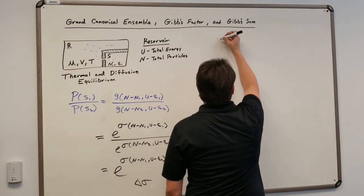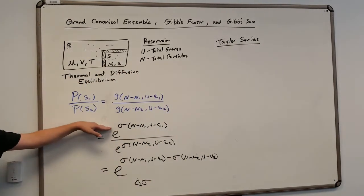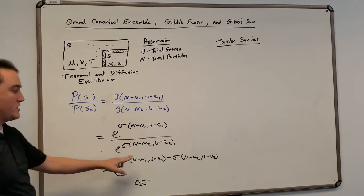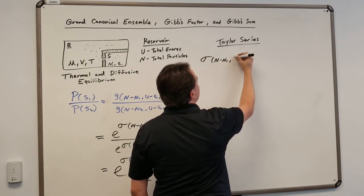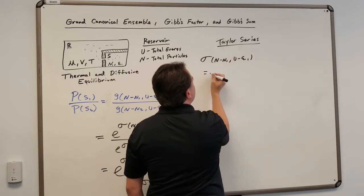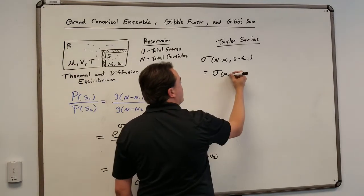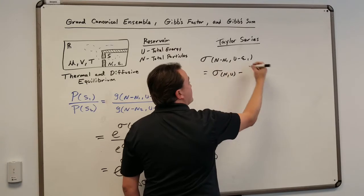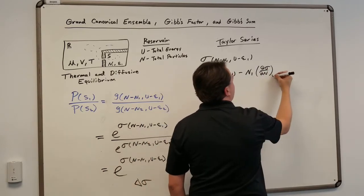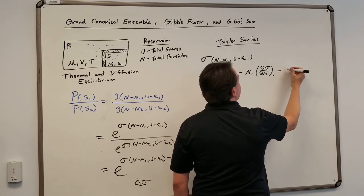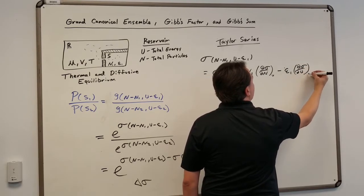Now we're going to use the Taylor series to write this equation — just the first one, since the second is exactly the same with different subscripts. For entropy of (N − N₁, U − ε₁), we have sigma of the total N and total U, minus N₁ times the partial derivative of sigma with respect to N holding U constant, minus ε₁ times the partial derivative of sigma with respect to U holding N constant.